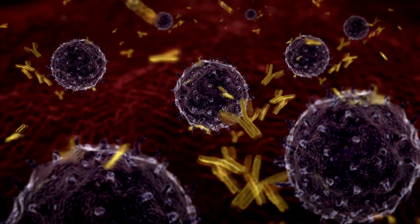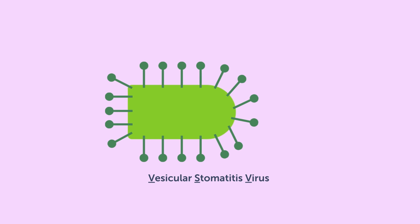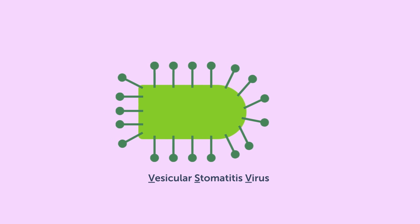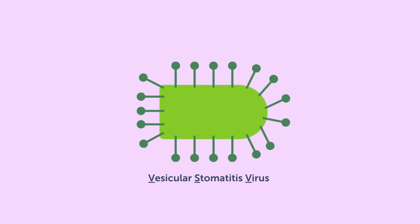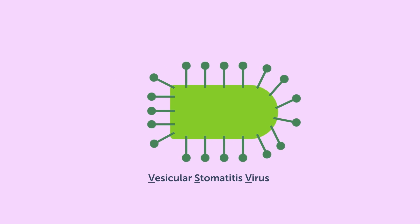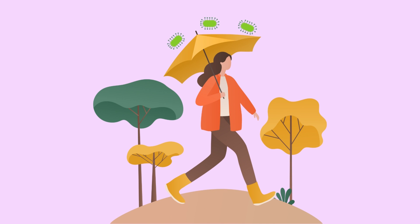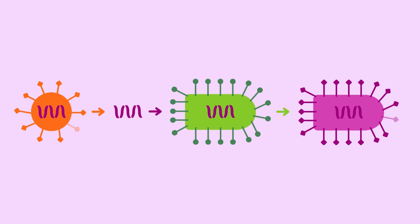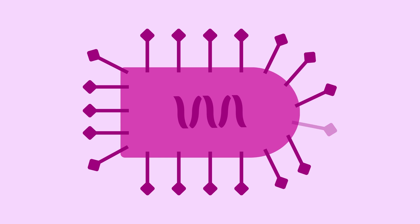One well-studied viral vector is the vesicular stomatitis virus, or VSV. VSV is a common animal virus that does not usually cause illness in humans. In a viral vector vaccine, scientists re-engineer VSV so that it displays a surface protein from a target pathogen, such as SARS-CoV-2,